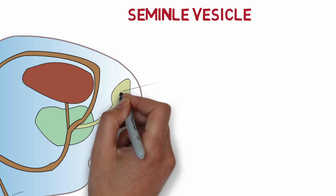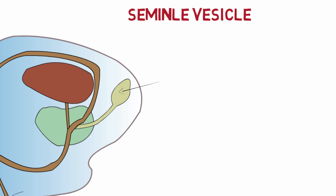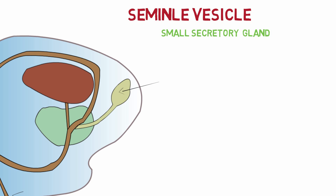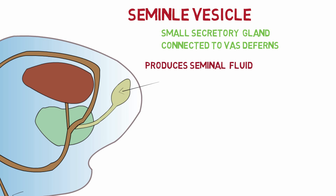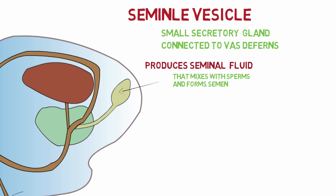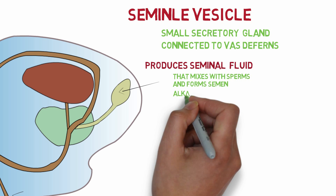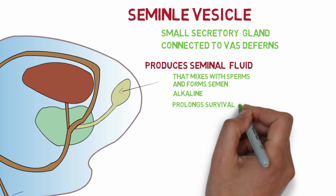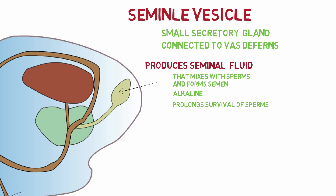The next internal reproductive organ is the seminal vesicle, which is a small secretory gland that connects to the vas deferens via a small duct. The main function of the seminal vesicle is to produce seminal fluid that mixes with the sperms and forms the semen. This fluid is alkaline, which prolongs the survival of the sperms, as the environment inside the vagina is acidic.